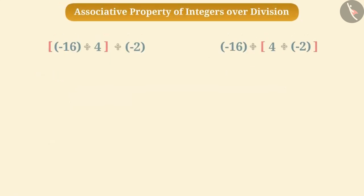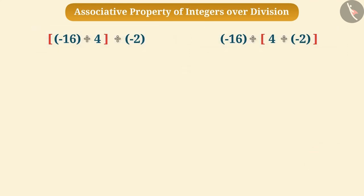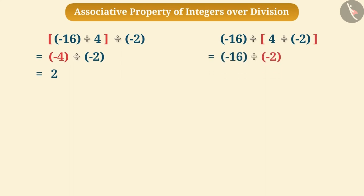Can you find out whether integers are associative over division? Suppose we need to find the division of minus 16, 4, and minus 2 — that is, we need to find the quotient. If we make a group of minus 16 and 4 and divide, the quotient will be 2. Similarly, if we make a group of 4 and minus 2 and divide, the quotient will be 8. The answer is not the same in both cases.